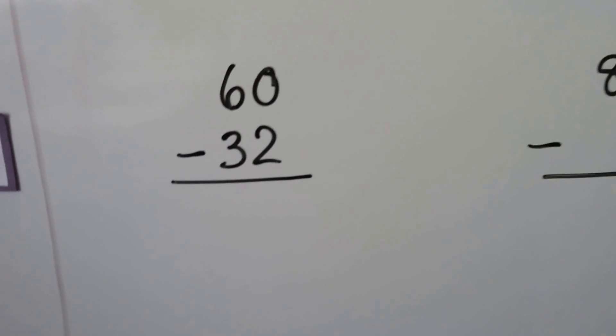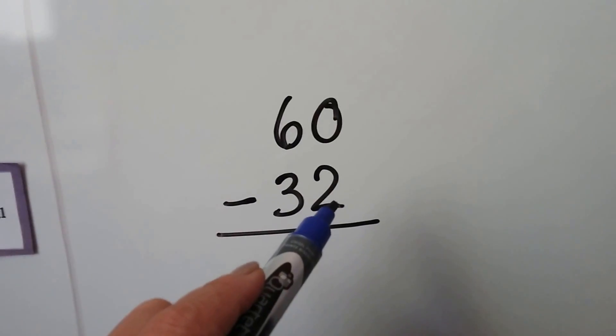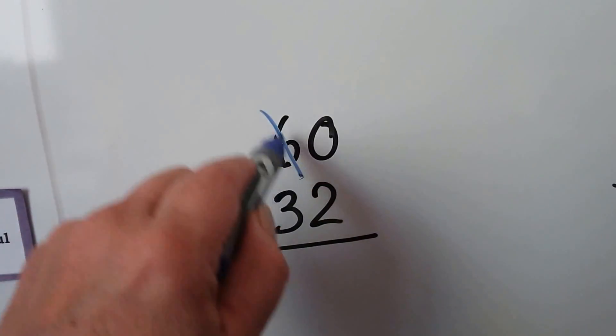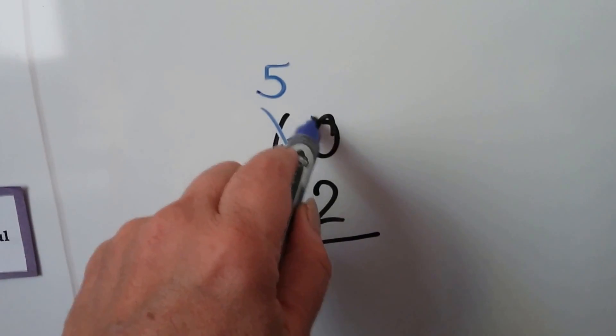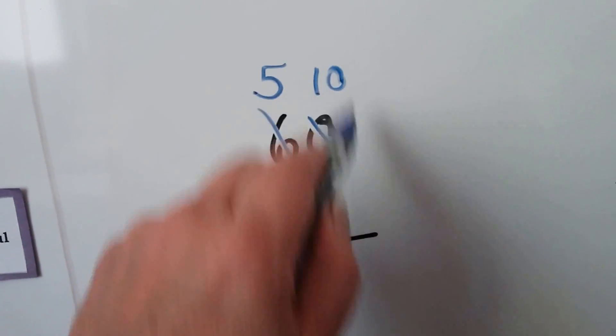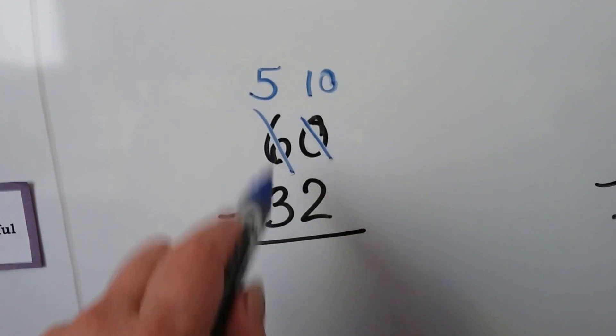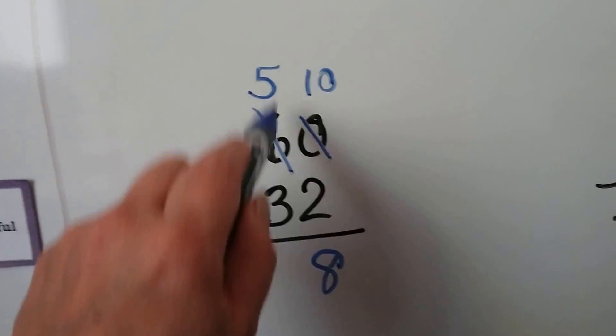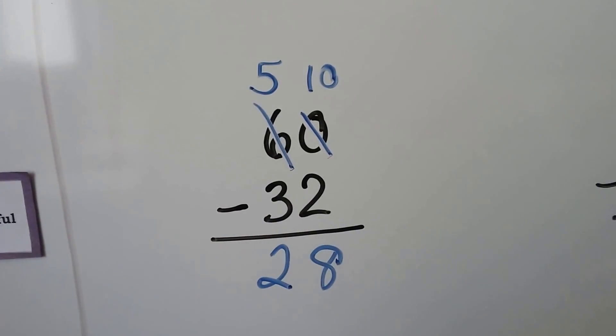Let's try it again. We have 60 minus 32. We look at the ones place. This 2 is larger than the 0. So we need to regroup from the 6. It becomes a 5. We give it to the ones place. Instead of 0, we now have a 10. That's the 10 we regrouped and took from this side. 10 minus 2 is 8. And 5 minus 3 is 2. We get a 28.